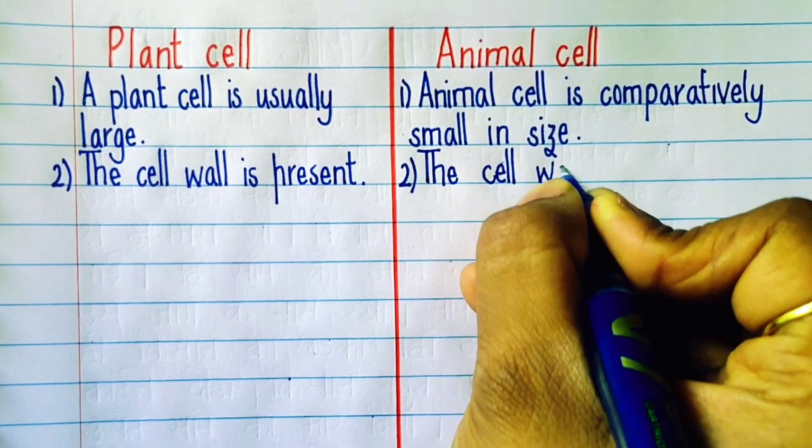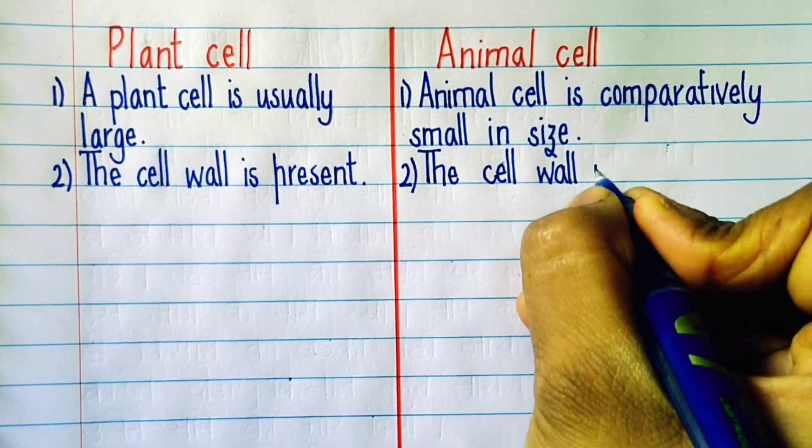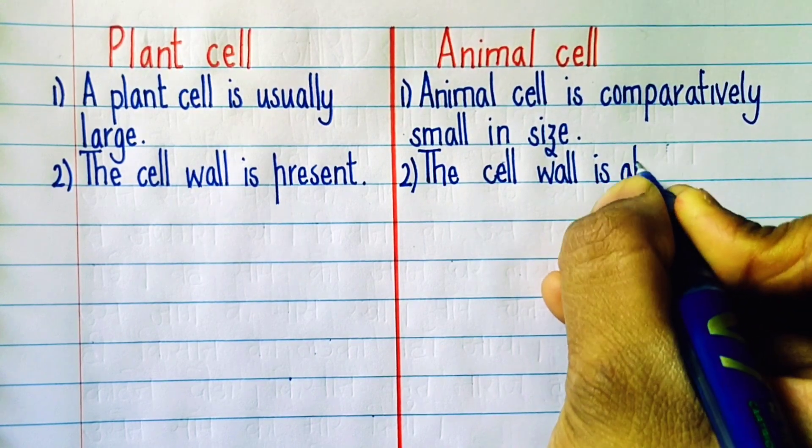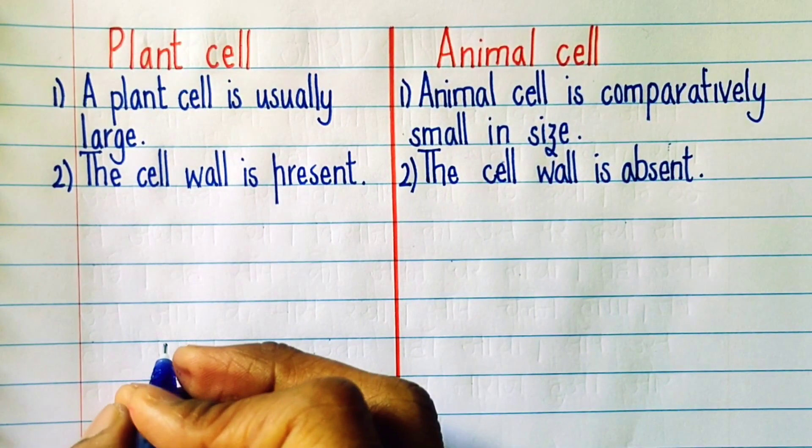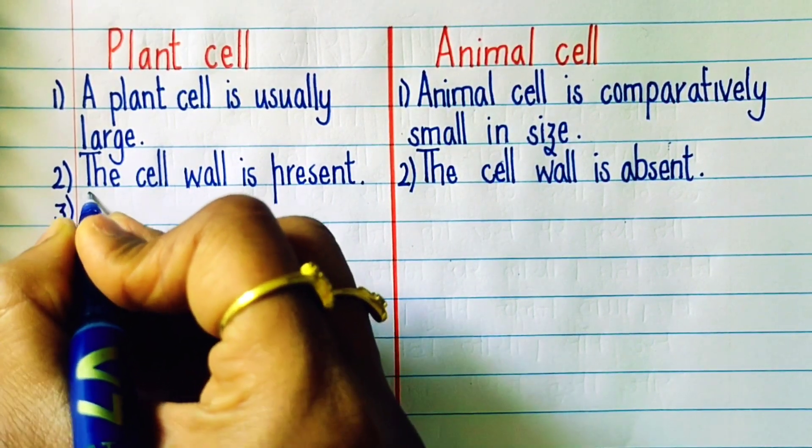The cell wall is present in case of plant cell, whereas in animal cells the cell wall is absent. This point is the main difference between the plant and the animal cell.